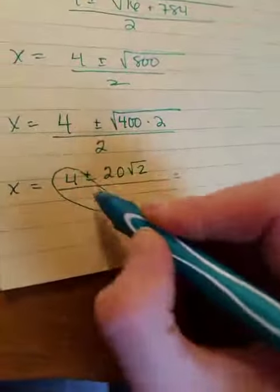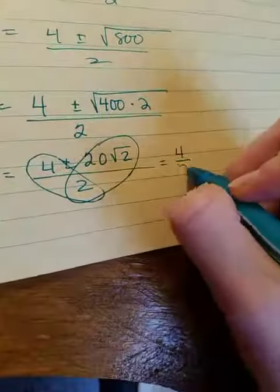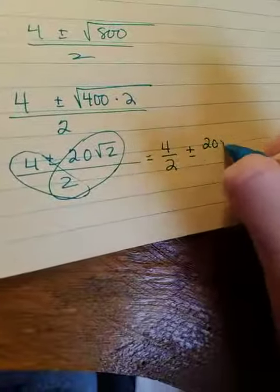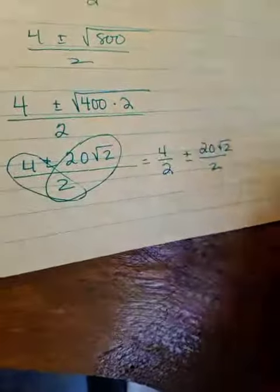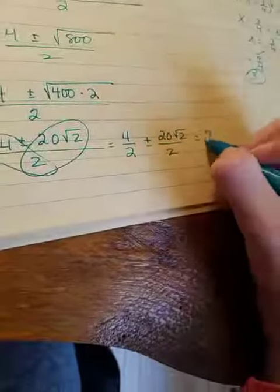Remember, the 2 here belongs to that 4, and it belongs to this here. So for those of you who need to see that broken up, it's really 4 over 2 plus or minus 20 root 2 over 2. If that helps you visualize it better, you can.